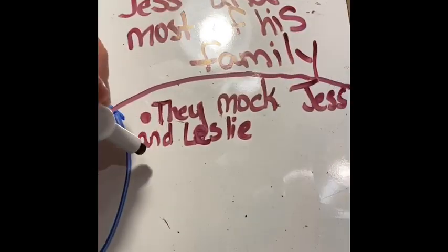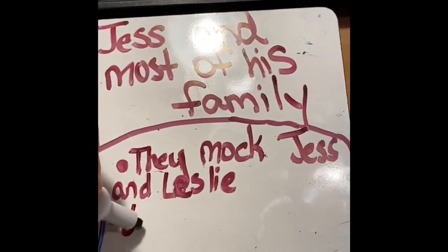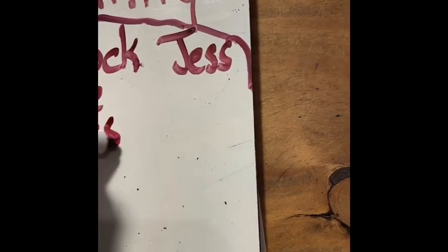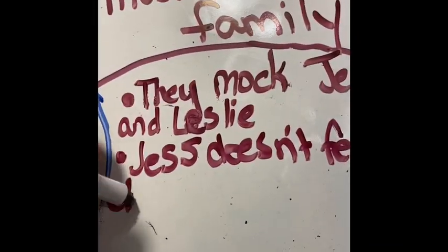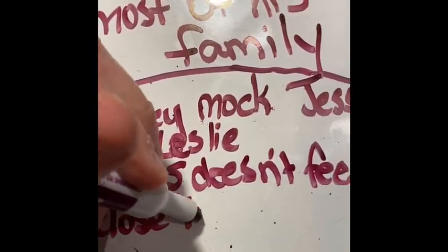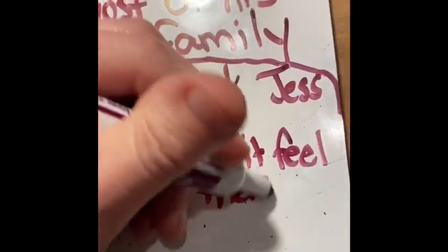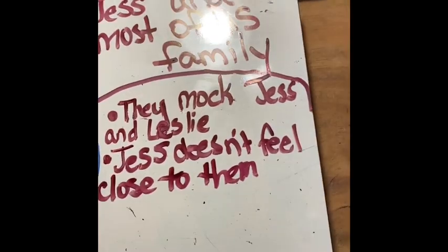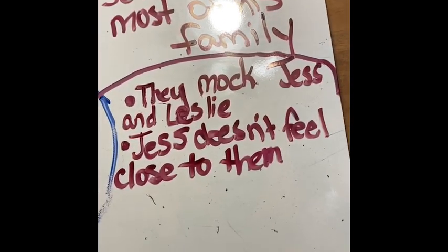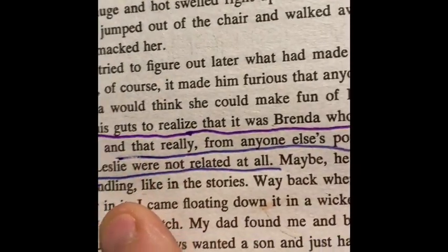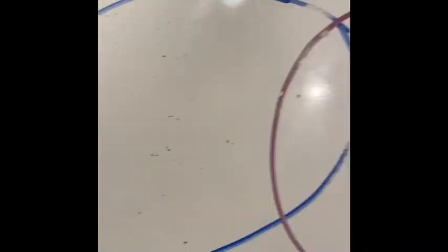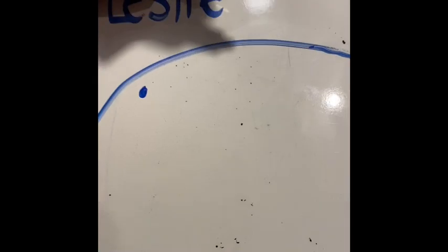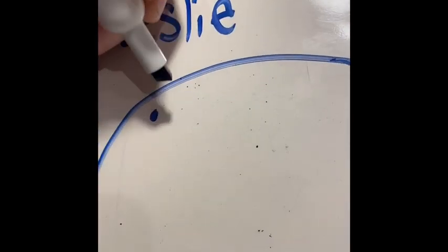We'll add a bullet point on the family side saying Jess doesn't feel close to them at all. And for the other half of that sentence, he was sad that Leslie is not related to him. So on the blue side, we can say they have a close relationship — she feels like family.